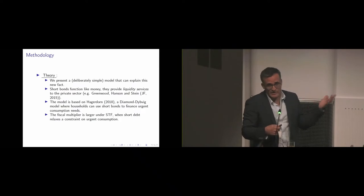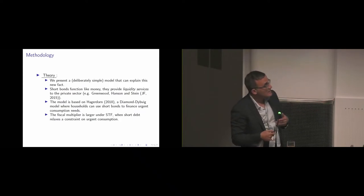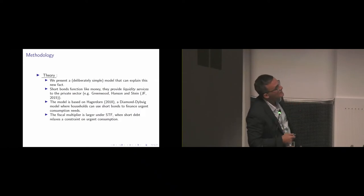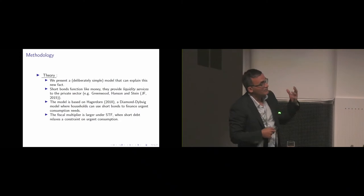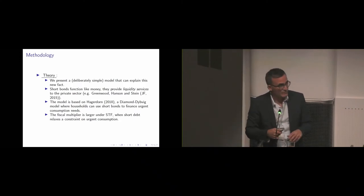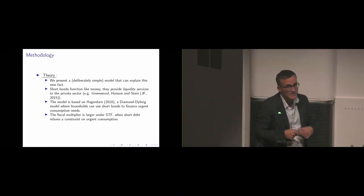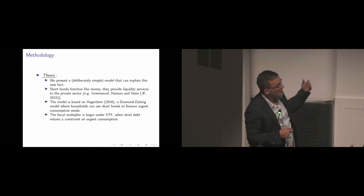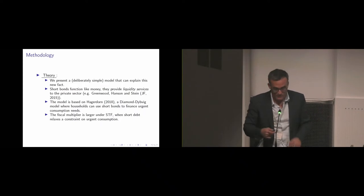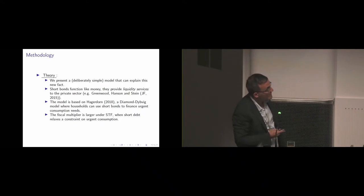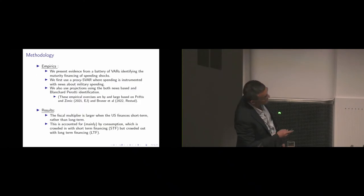It's a simple model in which agents are heterogeneous and face urgent consumption needs. When they get hit by a shock to the marginal utility of consumption, we make the assumption that they can only liquidate the short end of their portfolio. So the short bonds can act like money governed by a bonds in advance constraint. This model predicts a larger multiplier.